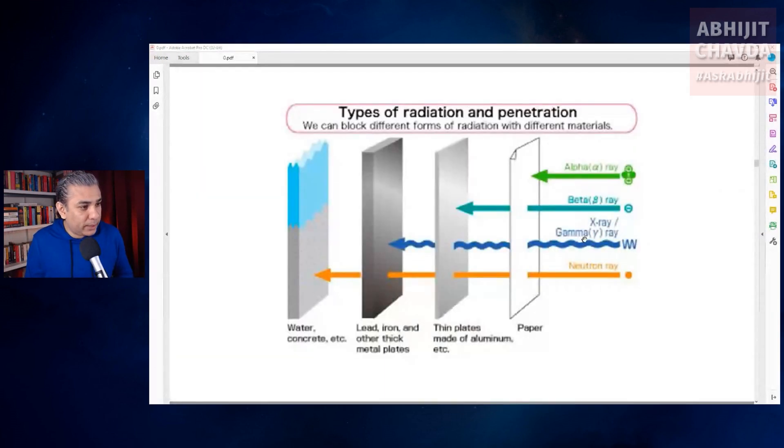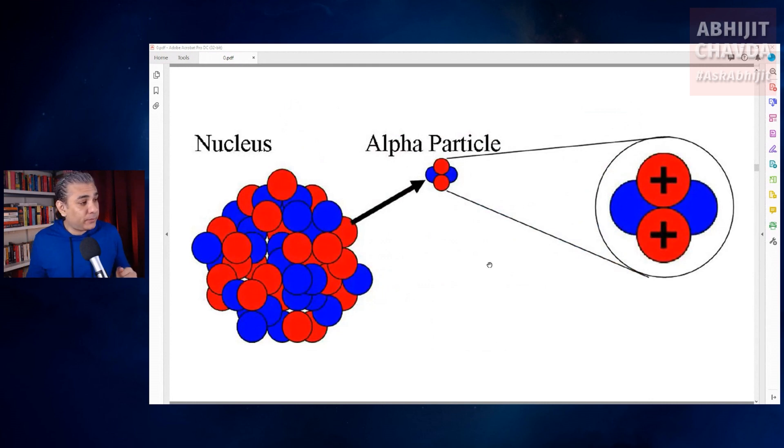The output of this decay is called radiation. Radioactive decay produces four different kinds of radiation. The alpha rays consist of alpha particles. An alpha particle is basically made up of two protons and two neutrons. It is basically a helium nucleus.